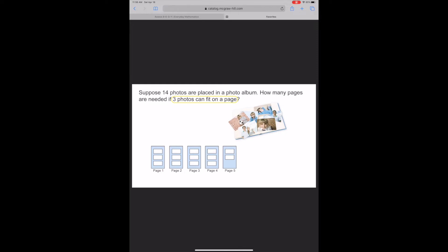This is the number model for 14 photos placed on pages that fit three photos each. This means that four pages will be filled and there is a remainder of two photos. The remainder in this problem, two, cannot be ignored because these two photos also need to go into the photo album. To answer the question, how many pages are needed, round up from four pages to the next whole number, five. Since four pages won't be enough for all of the photos, five pages are needed.